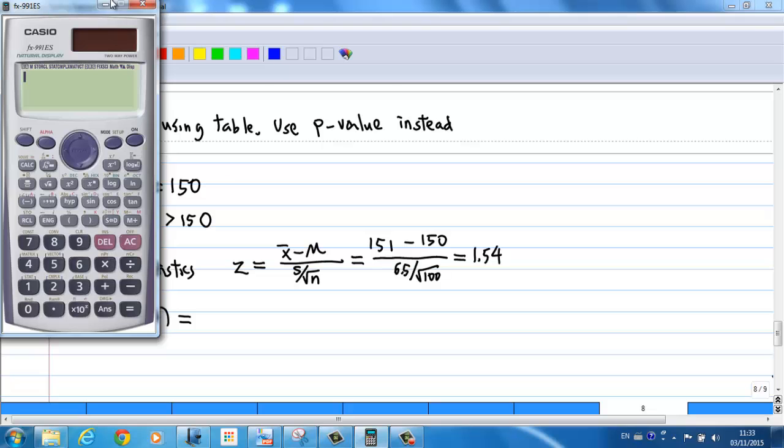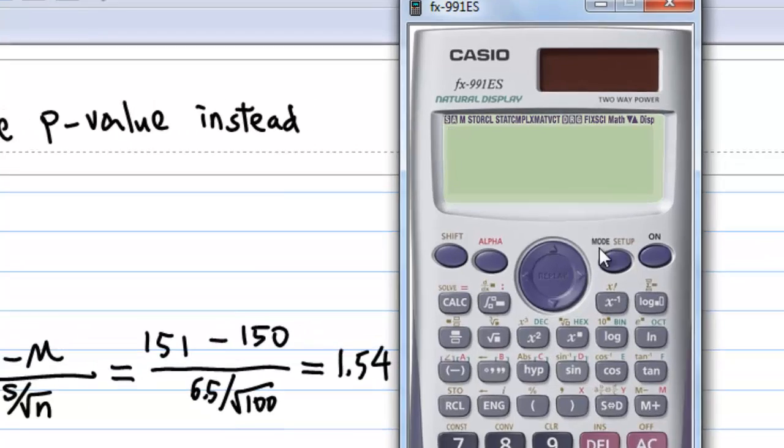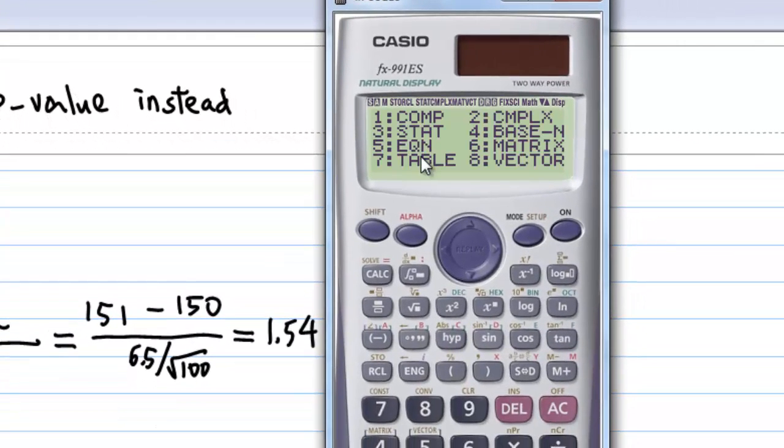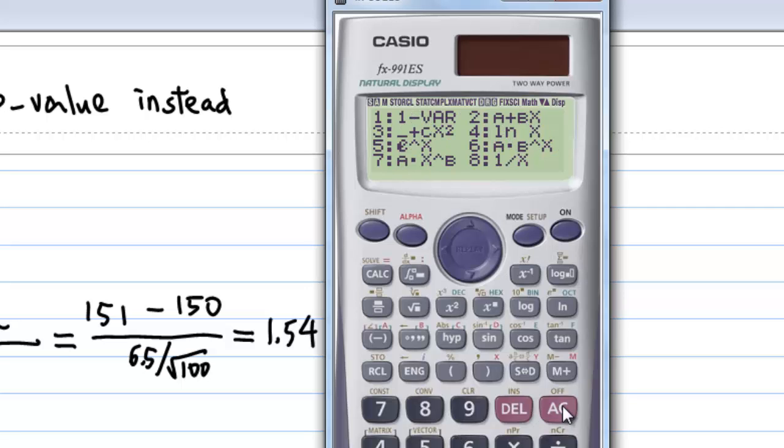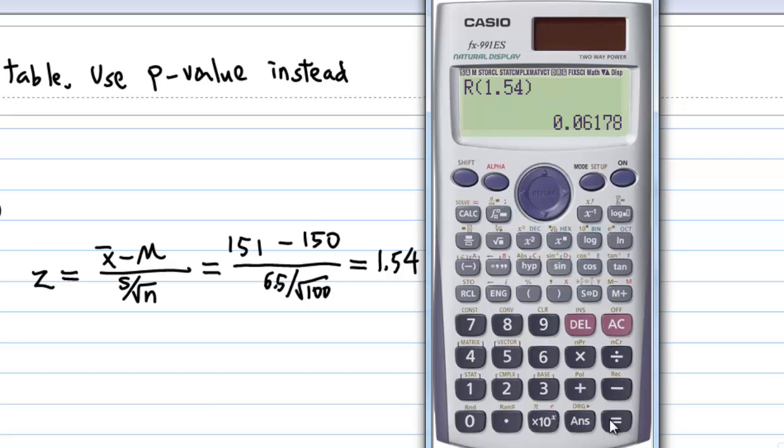In our calculator, let's call it out. Set the mode to statistic mode, 3. Press AC to get out. Shift 1, and select 7 for distribution. And then, select 3 for R, enter 1.54. And the probability is 0.06178.